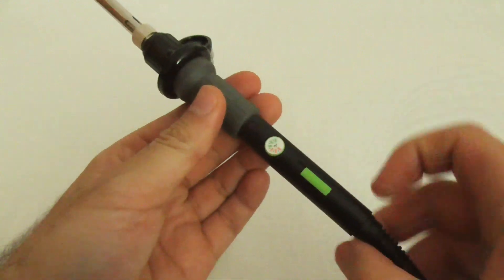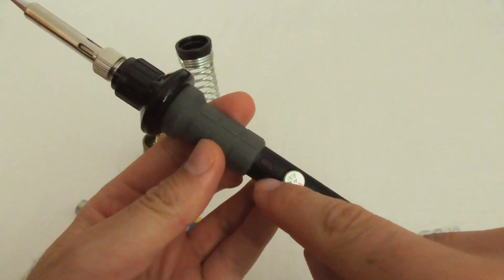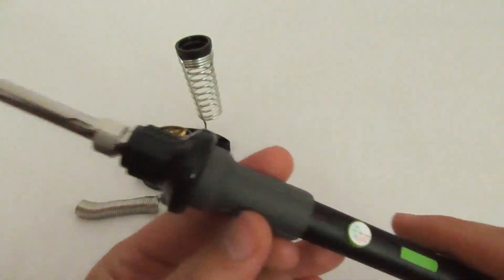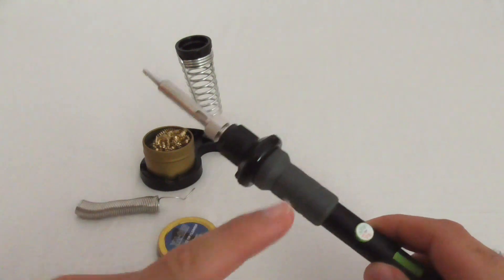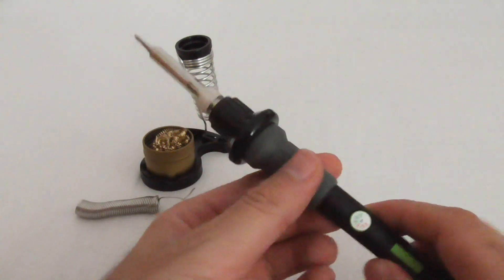And to turn it off, just move it back. Now it's on zero, the LED will not turn on. So it's automatically regulating the temperature of that tip.